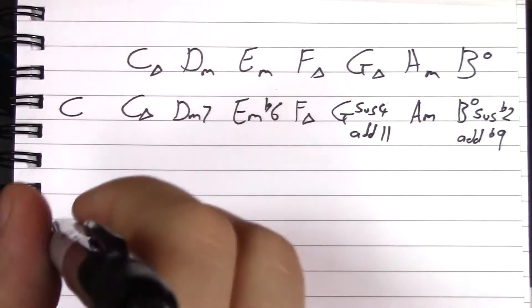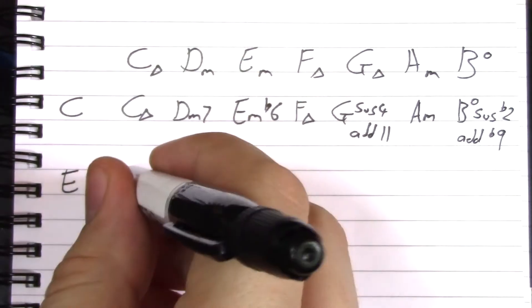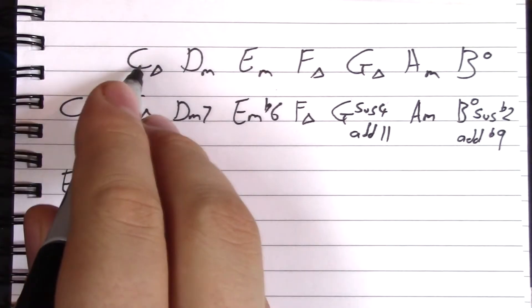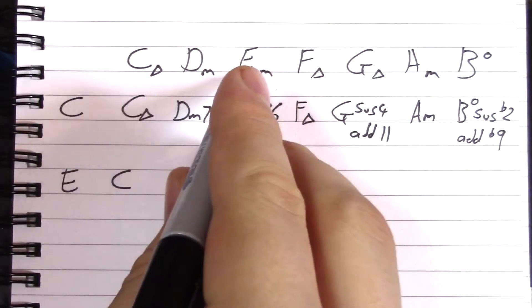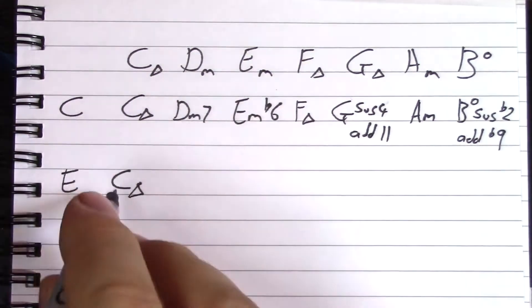So E—what kind of C chord do we have when we add an E? Well, one, two, three. E is actually the major third of C major, so that stays the same.